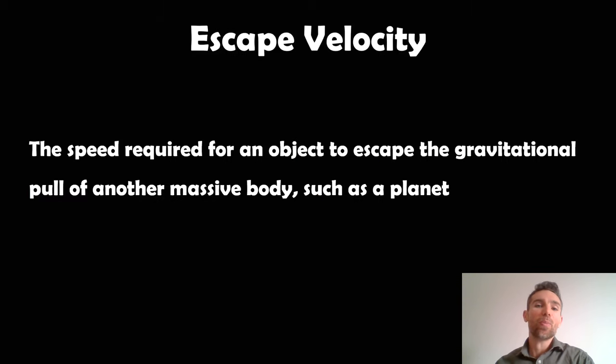Before we go any further to actually derive the escape velocity, let's define what it actually is. It is the speed required for an object to escape the gravitational pull of another massive object such as a planet. The example we can give here is probably Earth because it makes more sense. We launch rockets into space and we need them to be greater than the escape velocity in order to actually go into space.